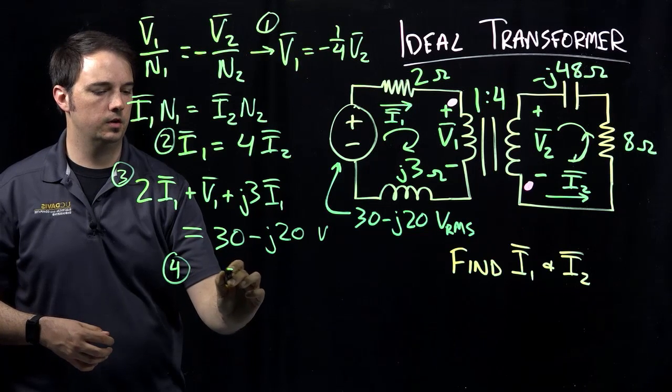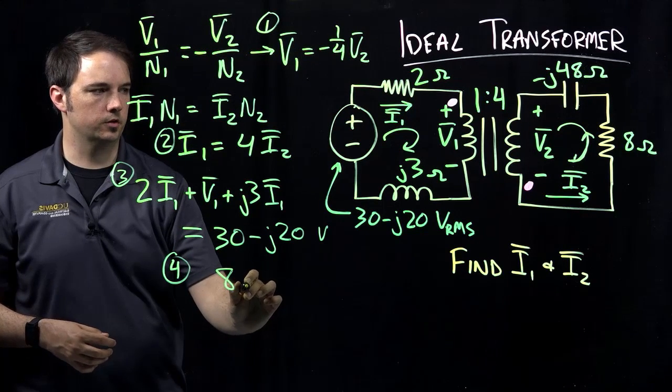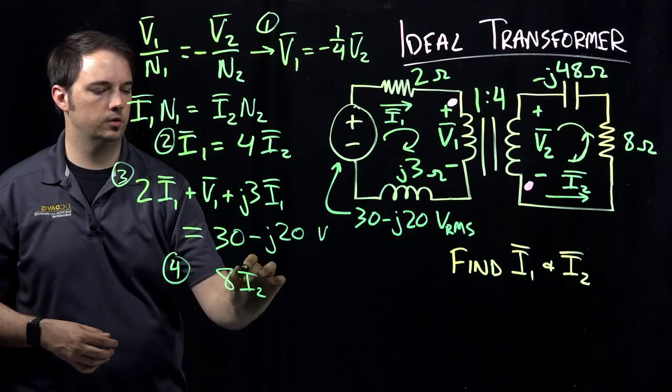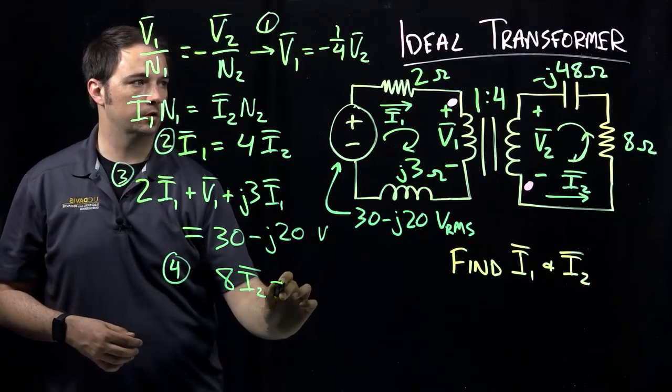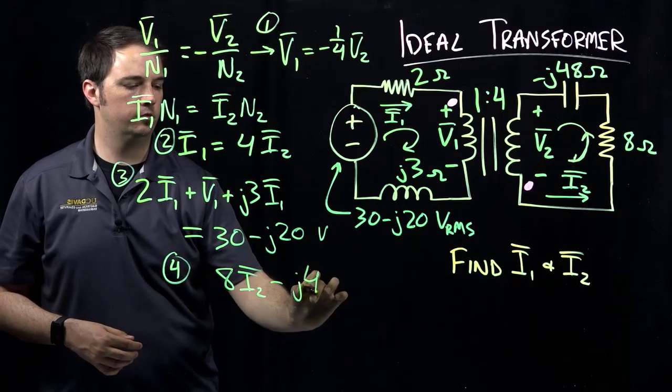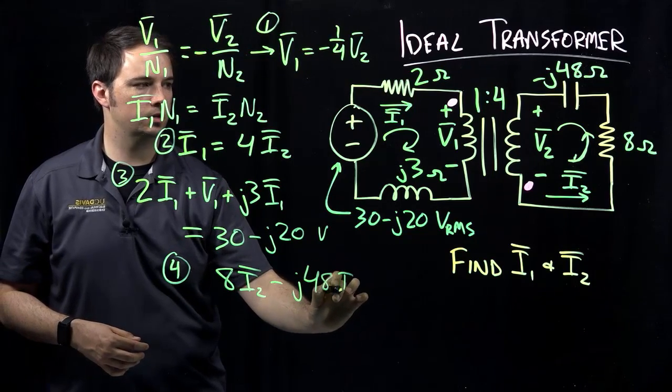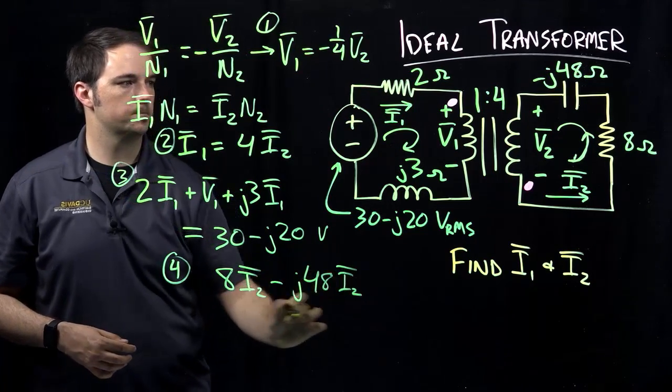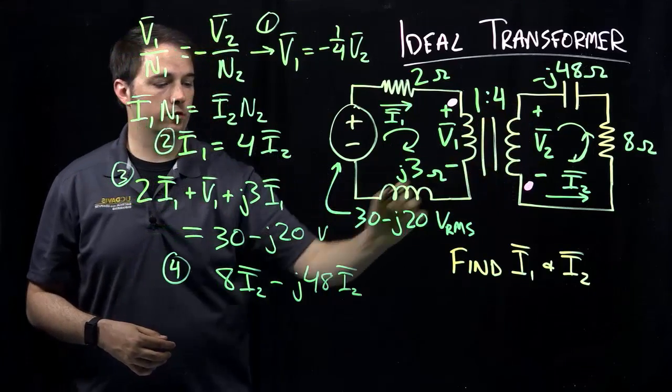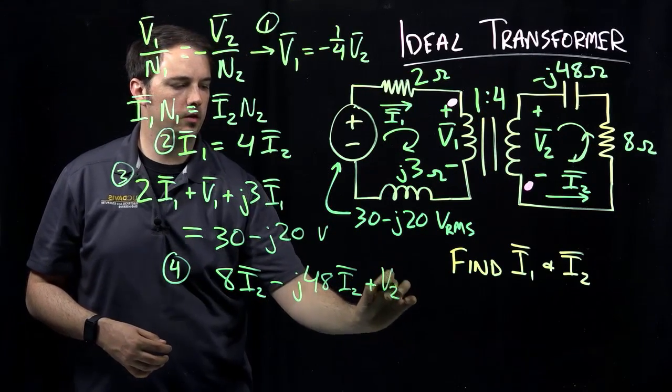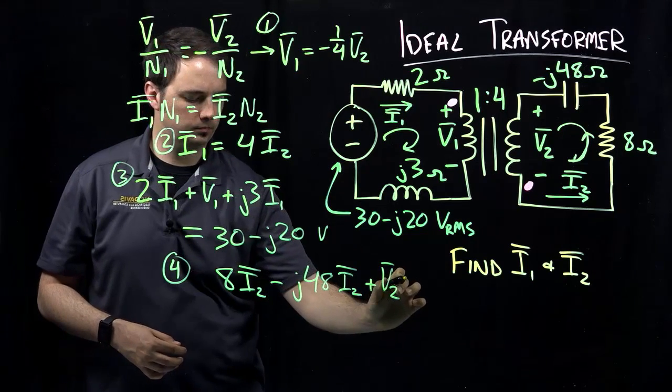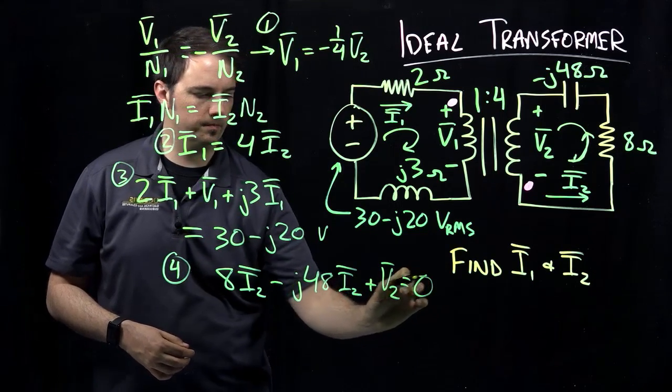So here I should have eight through my resistor times I2. And then through my capacitor, so it will look like minus J48 times I2. And then again, coming down across my voltage V2, that's a voltage drop as indicated. So plus V2 equals zero.